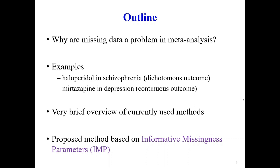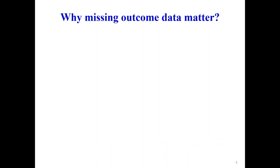We will give a brief overview of currently used methods and present a method based on what we call an informative missingness parameter, which relates the missing outcome to the observed outcomes.